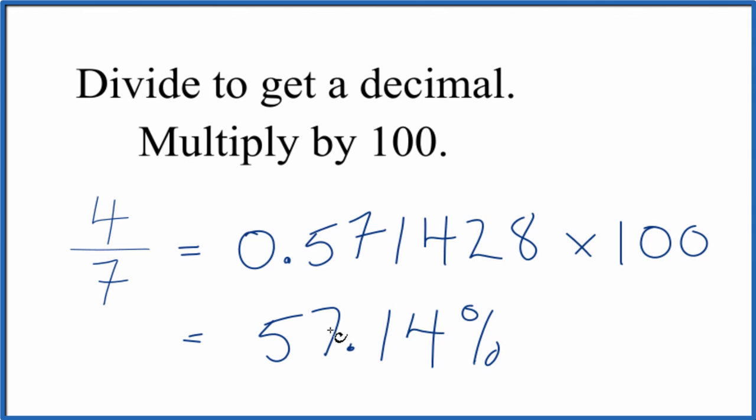So the fraction 4/7, that equals 57.14 percent. 4 is 57.14 percent of 7.